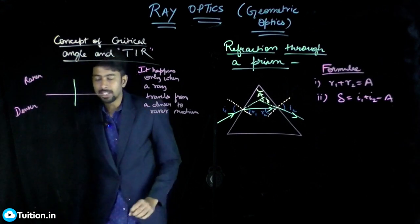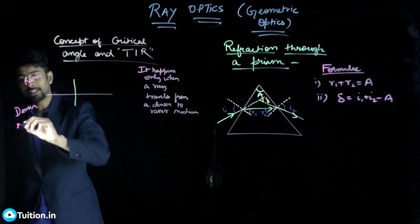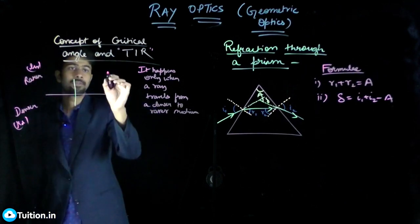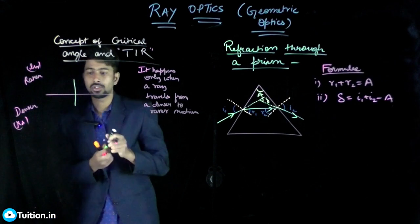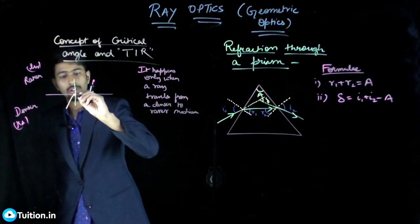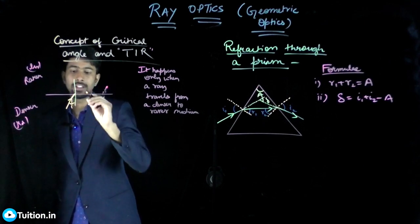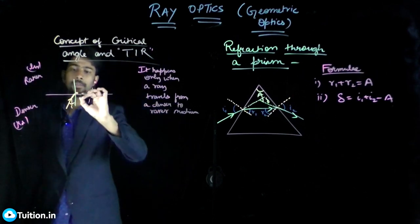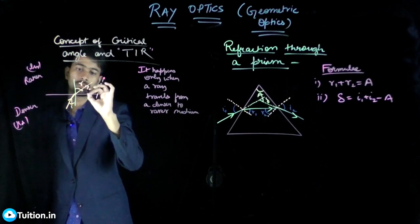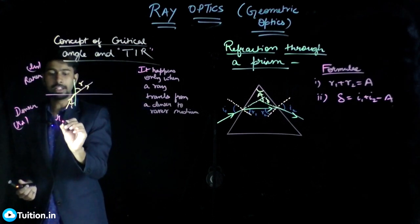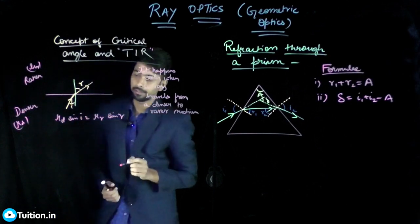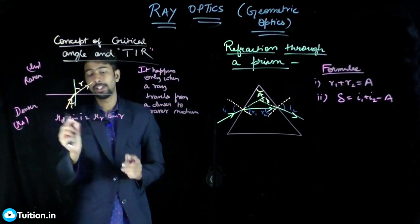If you incident a ray along the normal, the angle of incidence is 0 because it makes no angle with the normal. Let the denser medium have refractive index μd and the rarer medium have μr. In the general case, let i be the angle of incidence. Since it travels from denser to rarer medium, it bends away from the normal. By Snell's law: μd sin i = μr sin r.